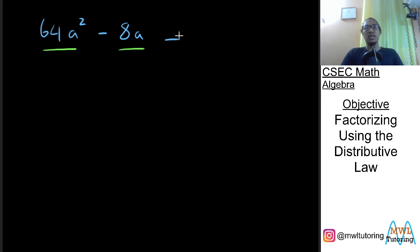What is actually common here? Well the first one that might jump out to you is a. A is common because we have an a squared here and we have an a here. So a is a common factor.